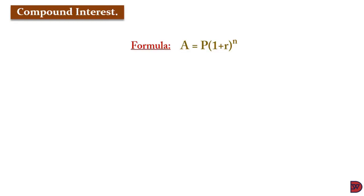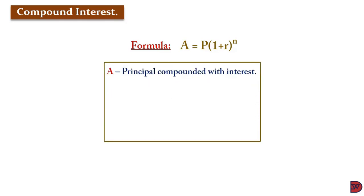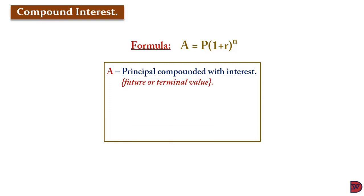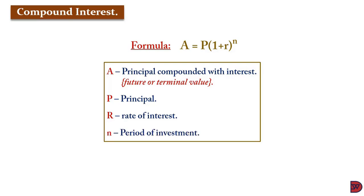There is a formula for compound interest: A = P × (1 + R)^N, where A is the principal compounded with interest — the future or terminal value; P is the principal, that is the amount initially invested; R is the rate of interest; and N is the number of periods for investment.